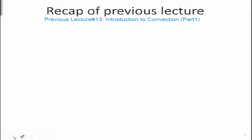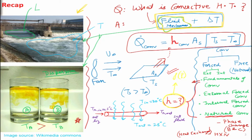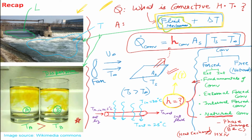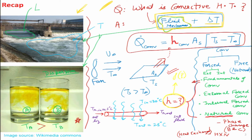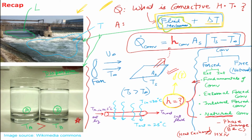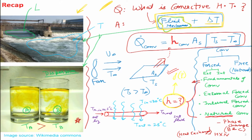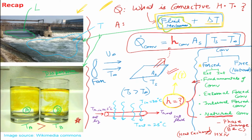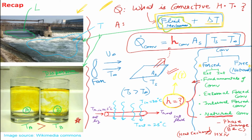Before we start, let us do a brief recap of the previous lecture. We started off with the simple question: what exactly is convective heat transfer when we identify it in the form of fluid mechanics taking place along with some delta T temperature difference. Convective heat transfer is the form of heat transfer in which a solid surface loses heat to the surrounding fluid. It can occur in two forms: forced convection and free or natural convection. If we have some external force — a pump for liquid, a blower for air, or even blowing over a hot cup of tea — those examples are for forced convection.